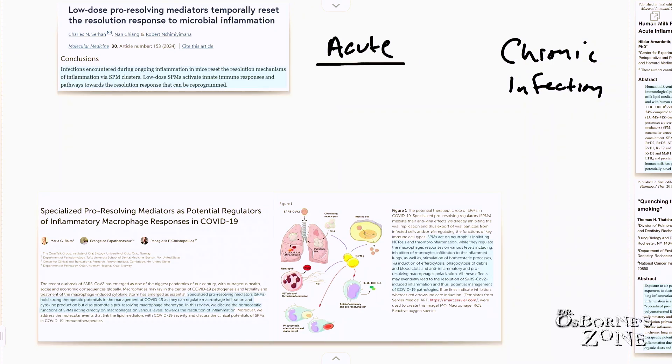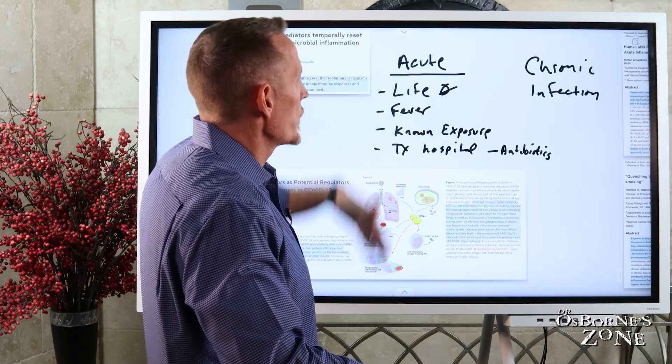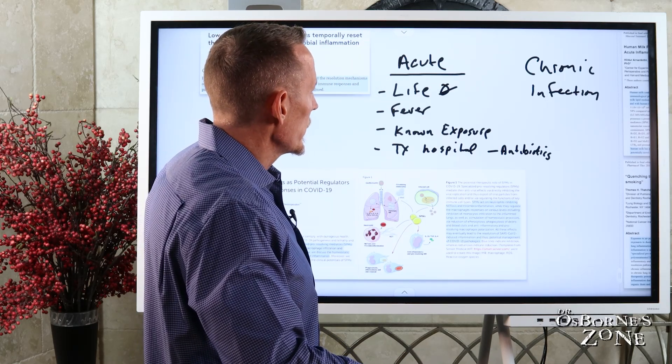Acute is generally immediately life-threatening. Generally there's a lot of times there's a fever and some type of known exposure, like known immediate exposure. This is oftentimes one of the situations where if it's bad enough, you're treated in a hospital environment. Sometimes you go to an ER and then you get a prescription for something like steroids and antibiotics if it's a bacterial infection to resolve the infection. That's acute. It's generally going to run a course between seven and 14 days, typically not longer.